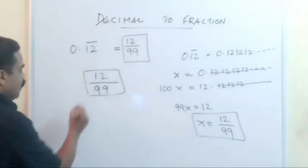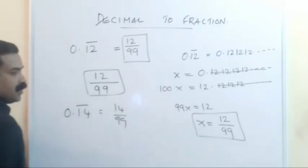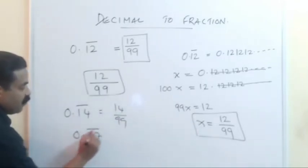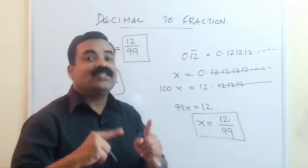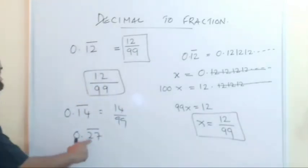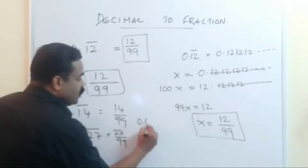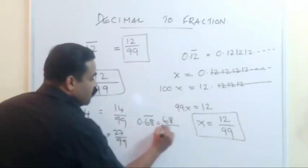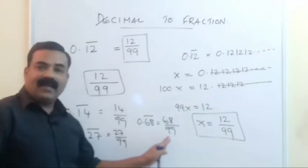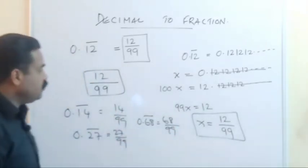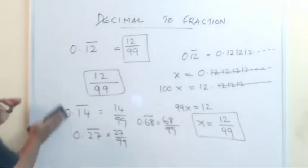For example: 0.14 bar gives 14/99. Taking 0.27 bar — remember the bar is on both digits — the fraction equivalent is 27/99. Taking 0.68 bar, bar on both numbers, you get 68/99. Whenever you have a fully repeating decimal like this, just remove the bar, put the number as the numerator, and put 99 as the denominator.